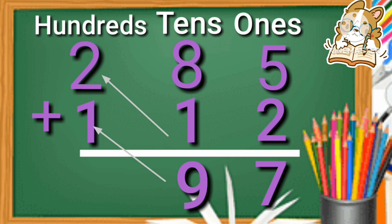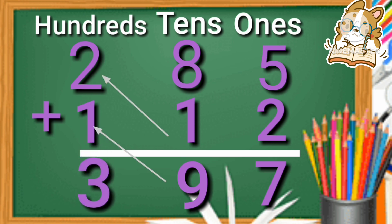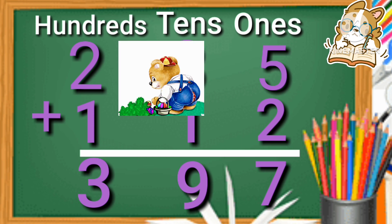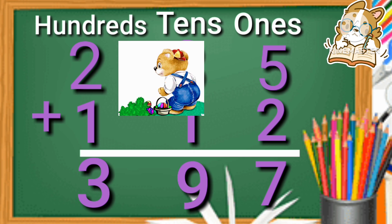Last we add the hundreds: two plus one is equal to three. So two hundred eighty-five plus one hundred twelve, the answer is three hundred ninety-seven.